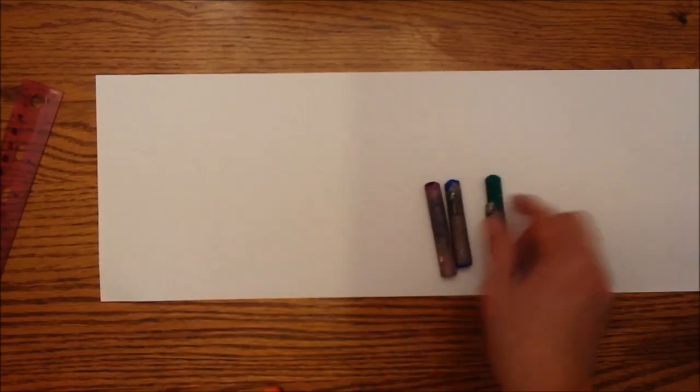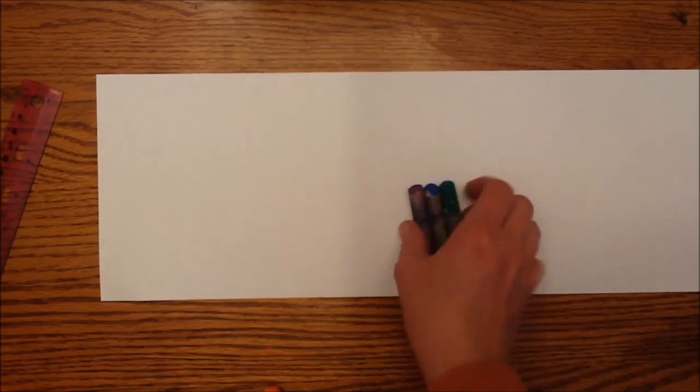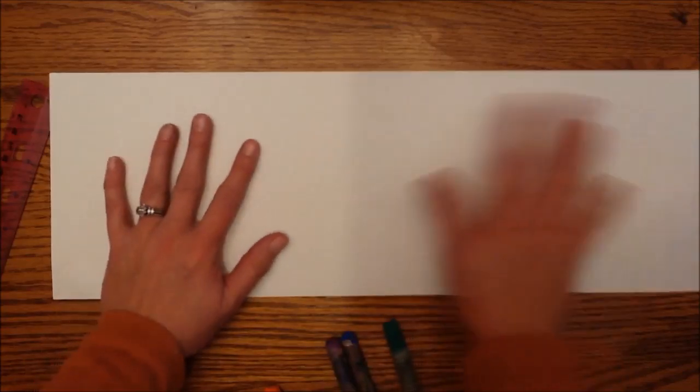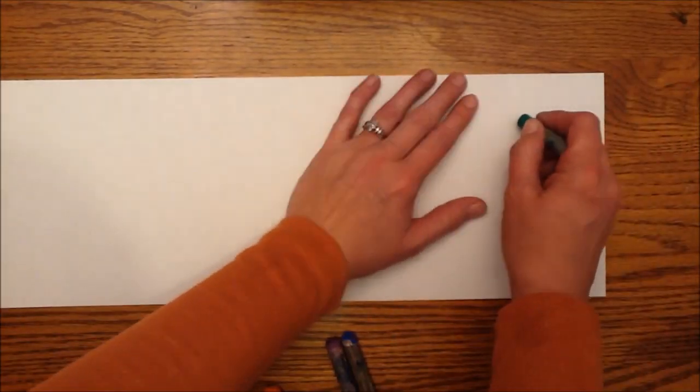We've been talking about warm colors and cool colors. We're going to do some of both for our concentric circles with Kandinsky for this banner. First I'm going to pick my cool colors: purple, blue, and green. I'm going to start with my cool color circles on one side and then I'm going to do my warm color circles on the other, and I want these to be various sizes.